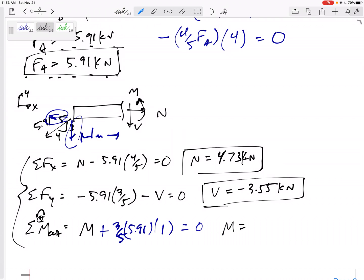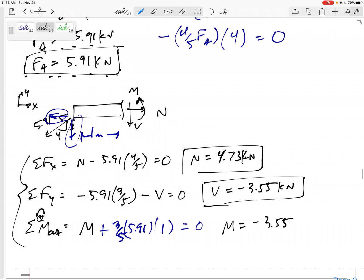So my moment would be, careful with the math here, negative 3.55 kilonewton meters. What do you do if it comes out negative? Box it in. So there we go. That's my answer for this problem.